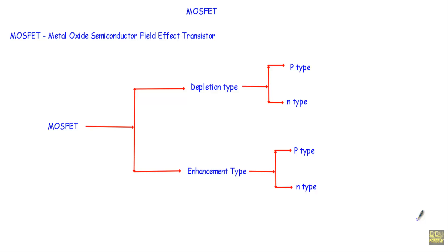In this video I will talk about n-type enhancement MOSFET. The word MOSFET is the acronym of metal oxide semiconductor field-effect transistor. I have to discuss the working principle of MOSFET separately because in my upcoming videos I will talk about NMOS inverter, NAND and NOR gate, PMOS inverter, NAND and NOR gate, and CMOS inverter, NAND and NOR gate respectively.